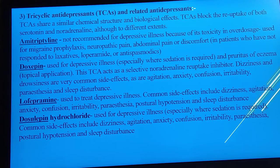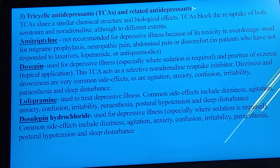Drugs in the tricyclic antidepressant class include: amitriptyline, used for migraine, neuropathic pain, abdominal pain or discomfort, and for patients not responding to laxatives or loperamide. Doxepin is used for depressive illness; contraindications and side effects include dizziness, drowsiness, agitation, anxiety, confusion, irritability, paresthesia, and sleep disturbance.